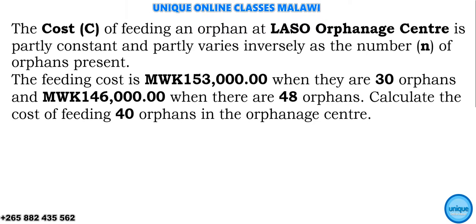Let's see how we can solve this budget violation problem. The question is: the cost C of feeding an orphan at the Last of Energy Center is partly constant, and partly varies inversely as the number N of orphans present. The feeding cost is 150,000 kwacha when there are 30 orphans, and 146,000 kwacha when there are 48 orphans. We are asked to find the feeding cost for 40 orphans.